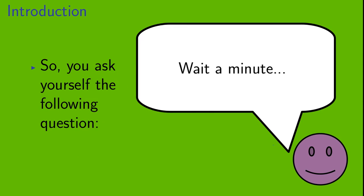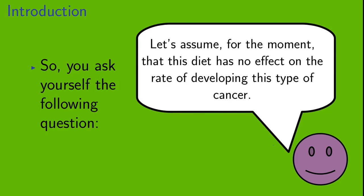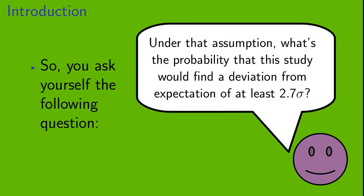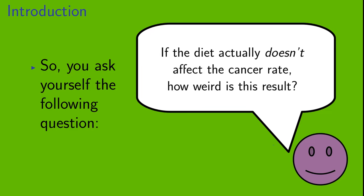So, you ask yourself the following question. Let's assume for the moment that this diet has no effect on the rate of developing this type of cancer. Under that assumption, what's the probability that this study would find a deviation from expectation of at least 2.7 sigma? If the diet actually doesn't affect the cancer rate, how weird is this result?